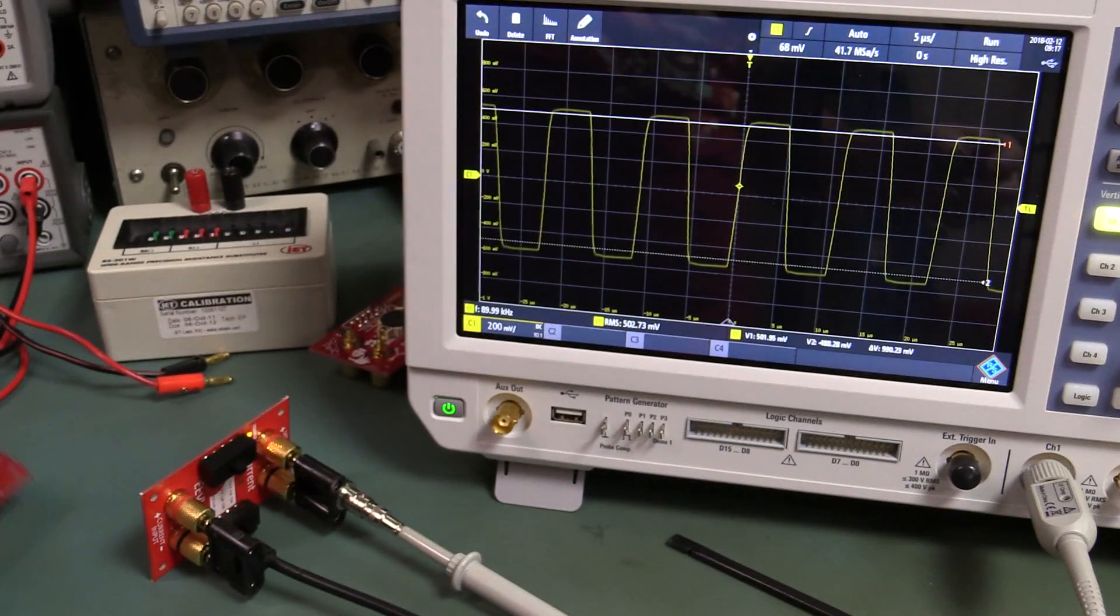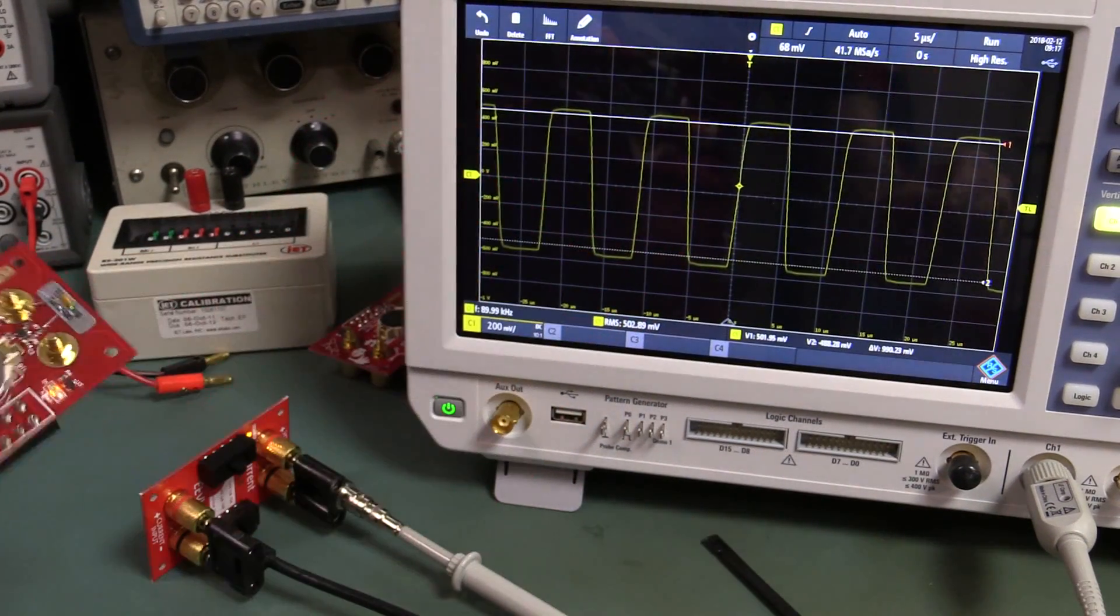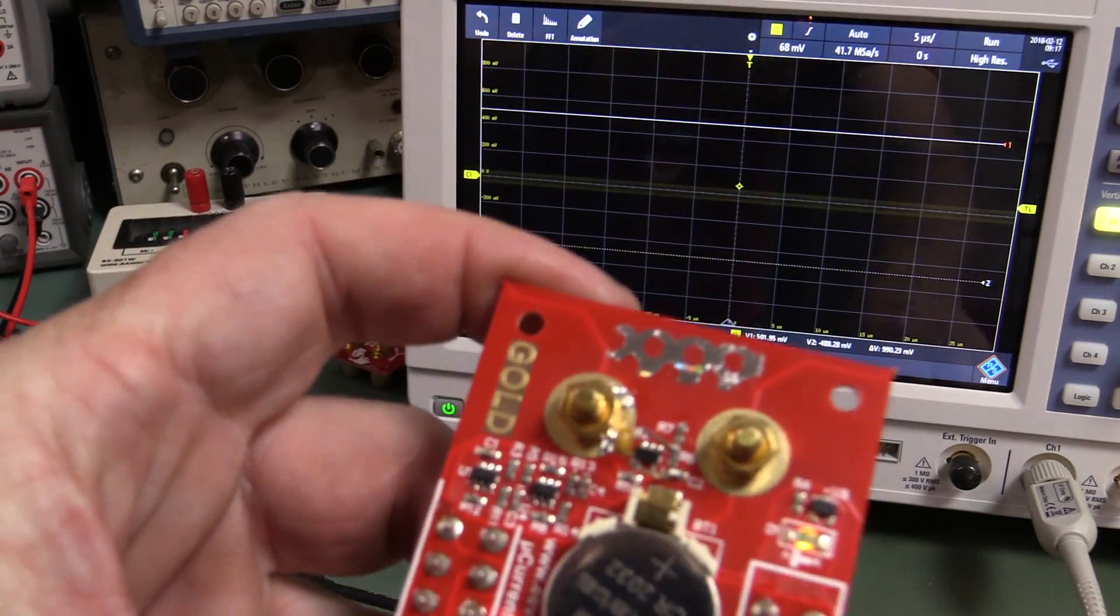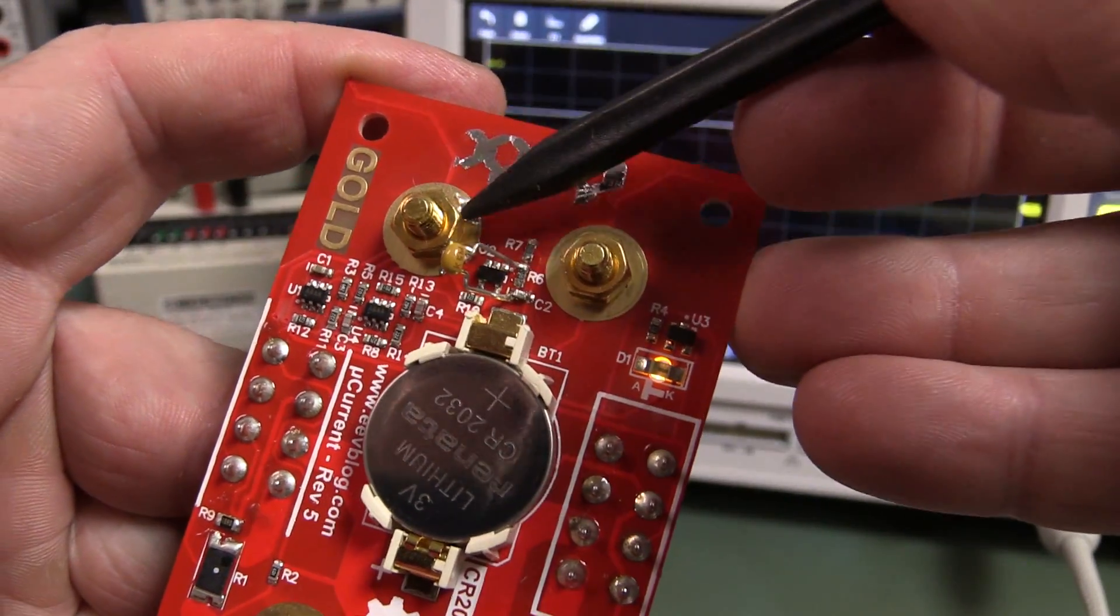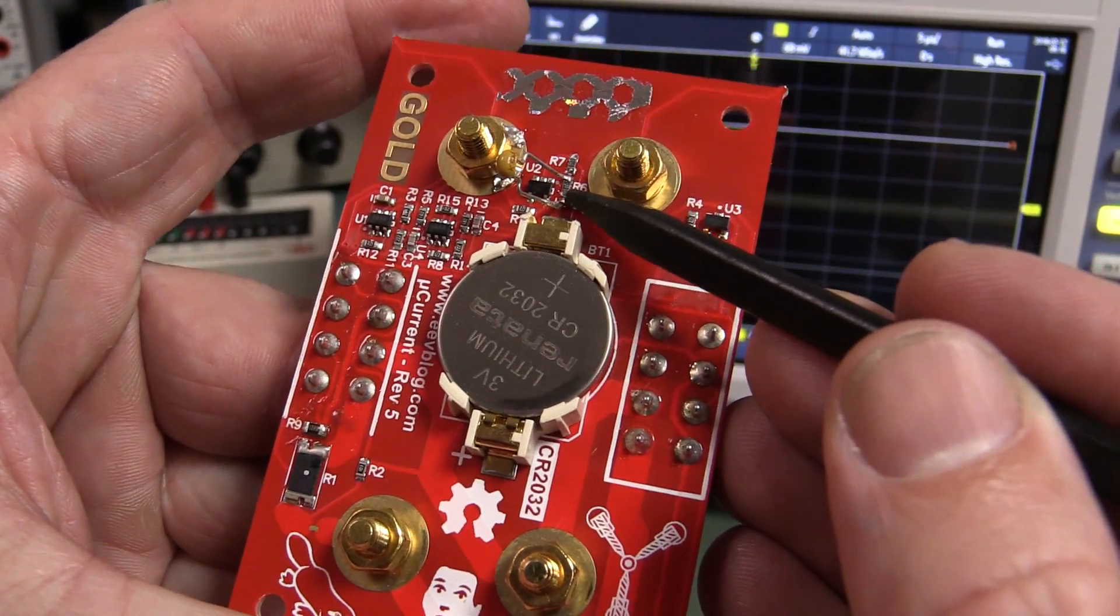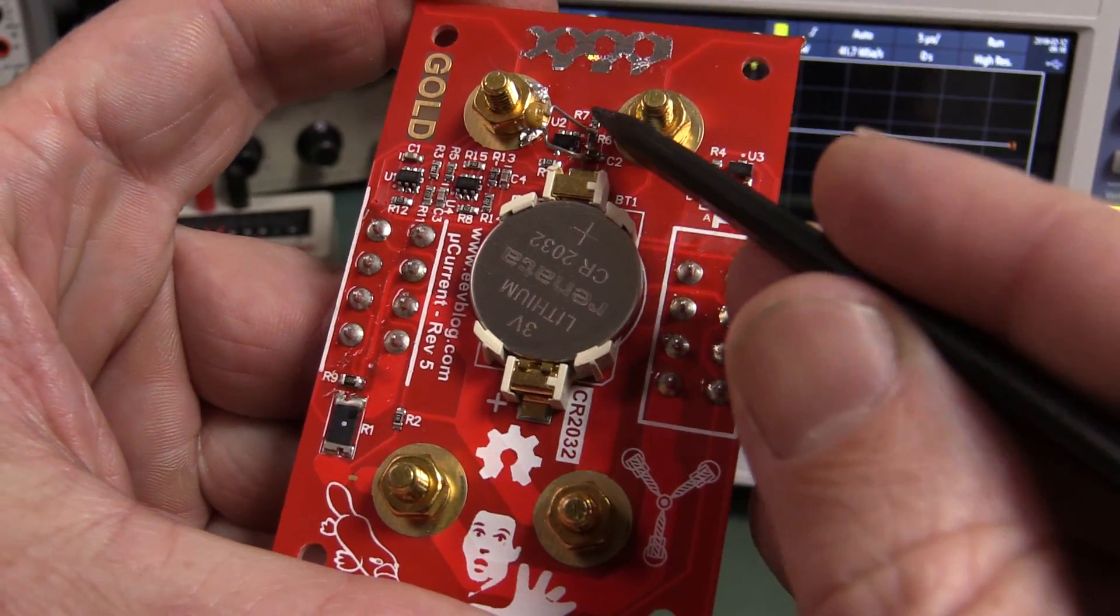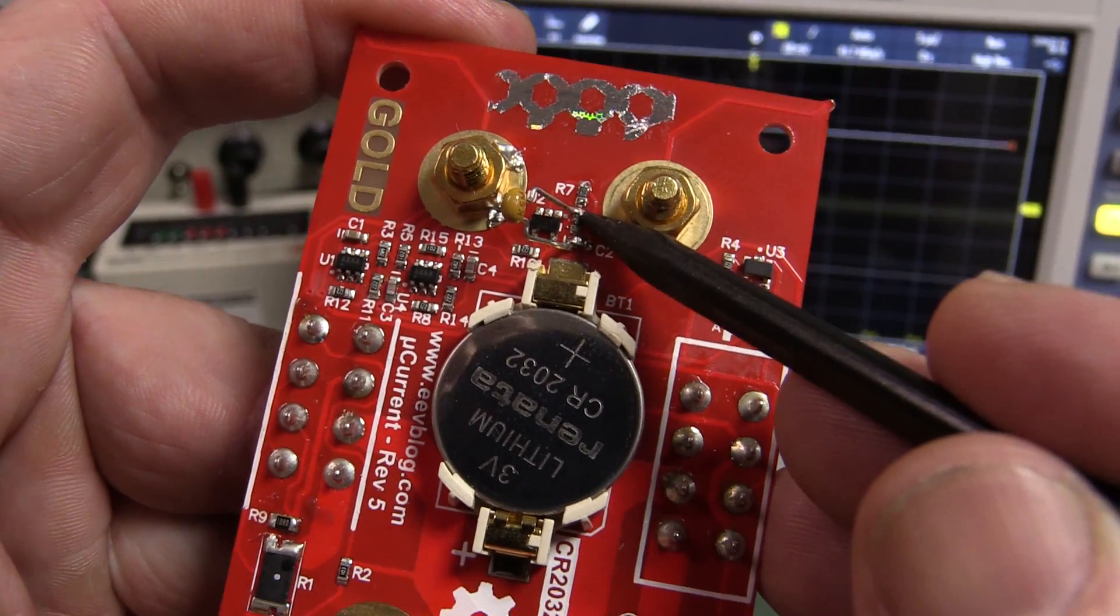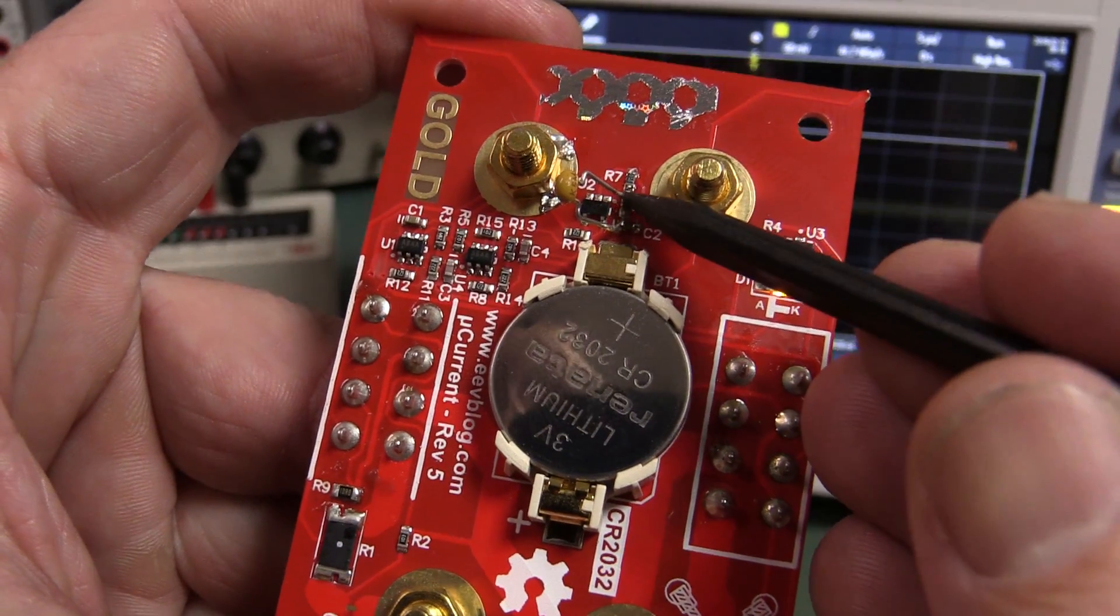What we're going to do here is remove the bypassing on the output VREF, and we're going to try and solve the oscillation by bypassing the input. The R7 and R6 there are the 200k voltage dividers that create the zero volt virtual reference. So what I'm doing is bypassing R6 there.